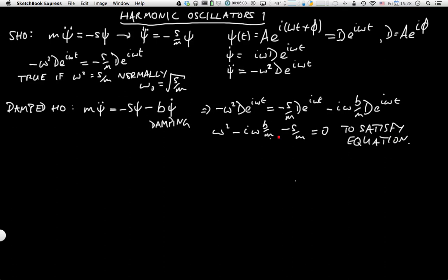This is a fairly simple quadratic. This implies that ω equals i b over m plus or minus the square root of 4s over m minus b² over m². We get the minus b² over m² because when we square the i we get a minus one.